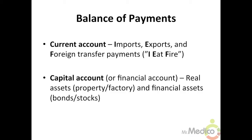A real asset is property or a factory; a financial asset is a stock or a bond. When foreign money flows into our current account as a result of an export, our current account is credited. When our currency leaves the capital account after purchasing a foreign apartment complex, the capital account is debited. If one account shows a surplus, the other will show a deficit — in the end, the two accounts should balance.